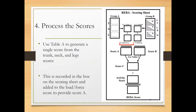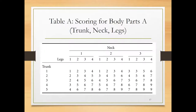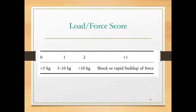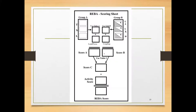We then look up Table A by matching the trunk, neck, and leg scores to reach a posture score. Before finalising Score A, we add the load and force score: nothing is added for loads under 5 kg; 1 is added for 5–10 kg; 2 is added for greater than 10 kg. An additional 1 is added if there is a shock or rapid build-up of force during load handling. The value from Table A plus the load/force score gives Score A.